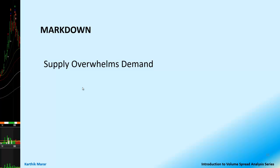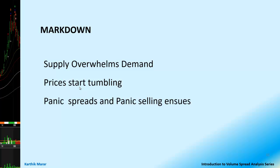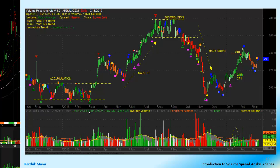In the markdown phase, the supply overwhelms the demand. When the demand gets totally exhausted and the supply is plenty, prices start tumbling because there is no demand. Panic spreads and panic selling ensues. The weak hands keep waiting in anticipation of higher prices, and finally they panic and start selling. That is the time the spreads of the bars or candles start widening. This is a real-life example where you can clearly see the four phases of market manipulation: accumulation, markup, distribution, and then markdown.